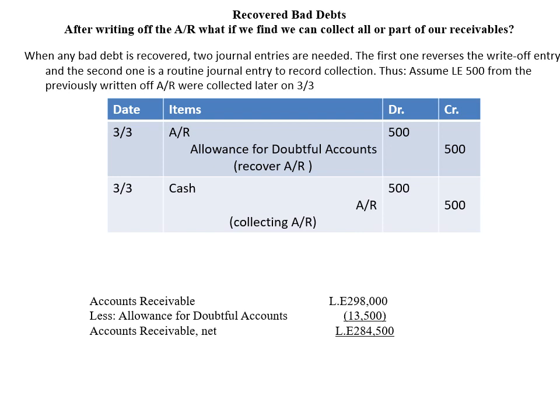The allowance was $13,000 in the previous slide; now it's $13,500 because the $500 removed from the allowance before is returned back. The recovery of accounts receivable adds to the allowance. When accounts receivable is written off, we take from the allowance; when it is recovered, we return it to the allowance. So the $500 is returned back, making the allowance $13,500. Subtracting the allowance from accounts receivable gives net accounts receivable of $284,500.